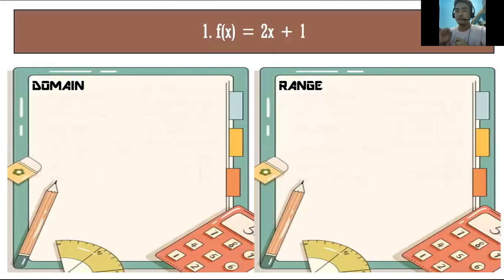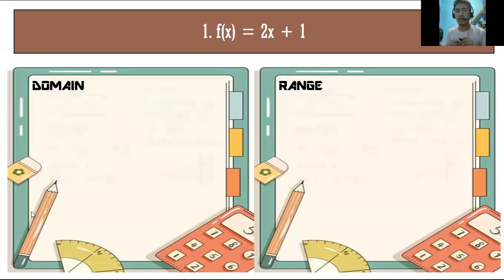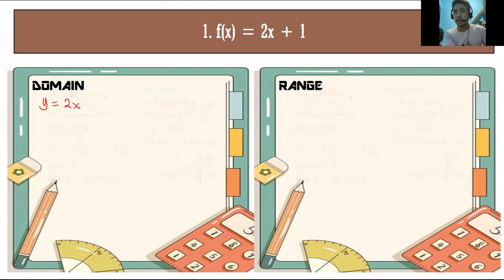The first given is f(x) = 2x + 1. How are we going to get the domain and range? This is an easy case — there is no variable in the denominator and no radical sign. So to get the domain, the domain is all real numbers.